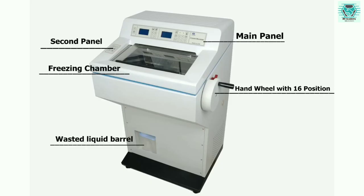In the diagram, the parts of the cryostat are shown. We can see the main panel, the second panel, the freezing chamber, the hand wheel, and the waste liquid barrel.